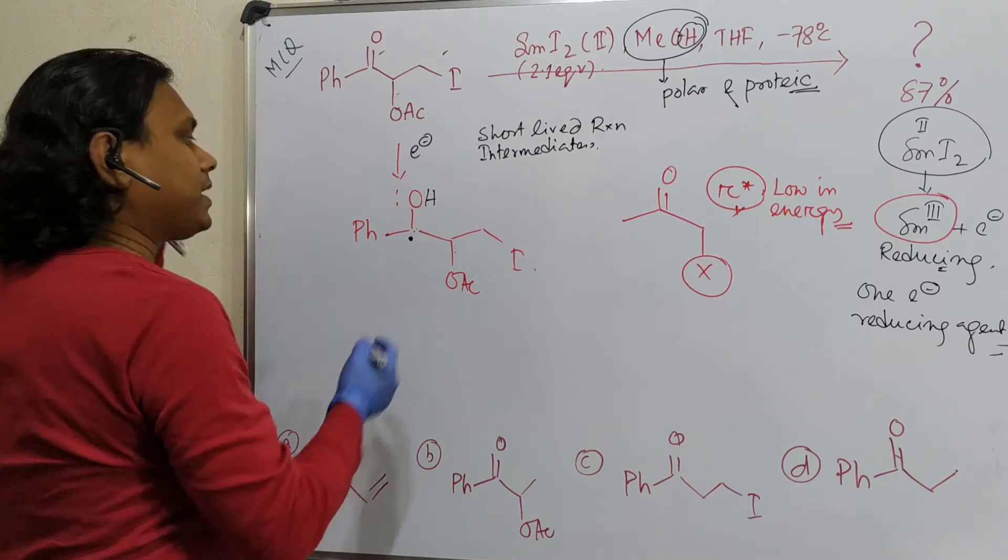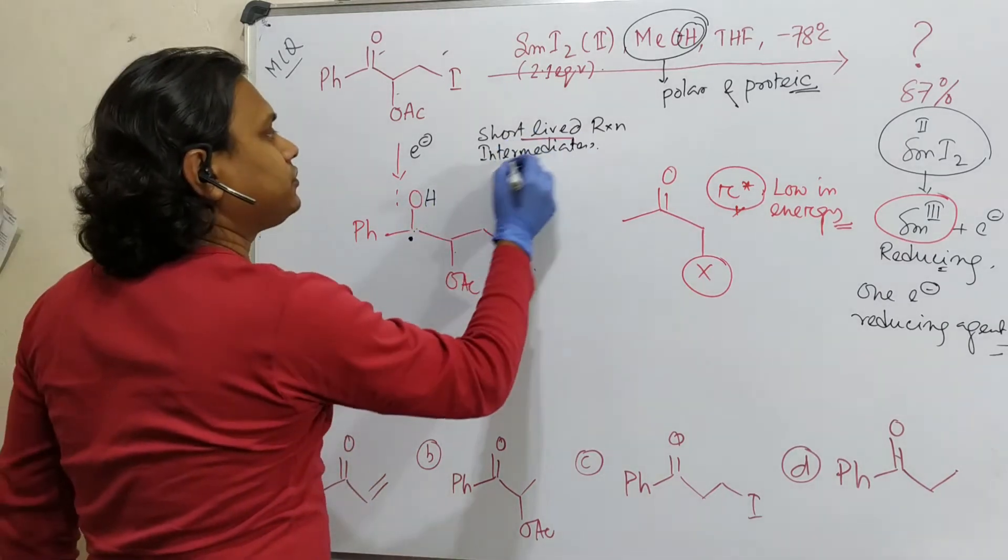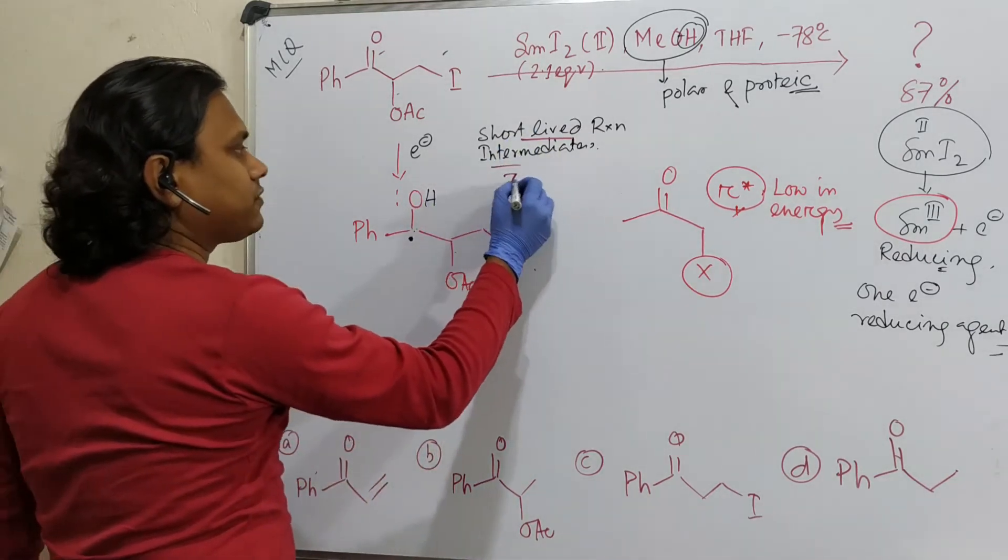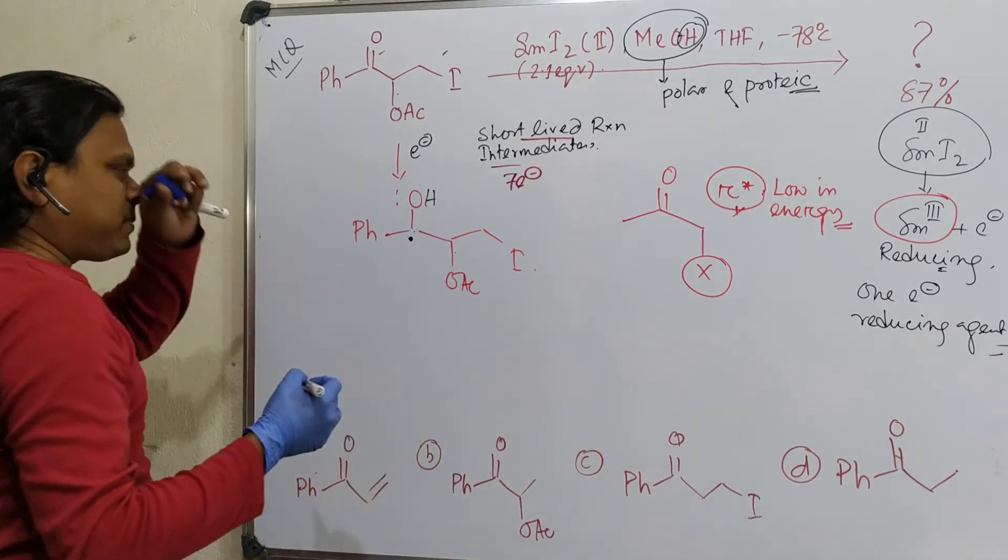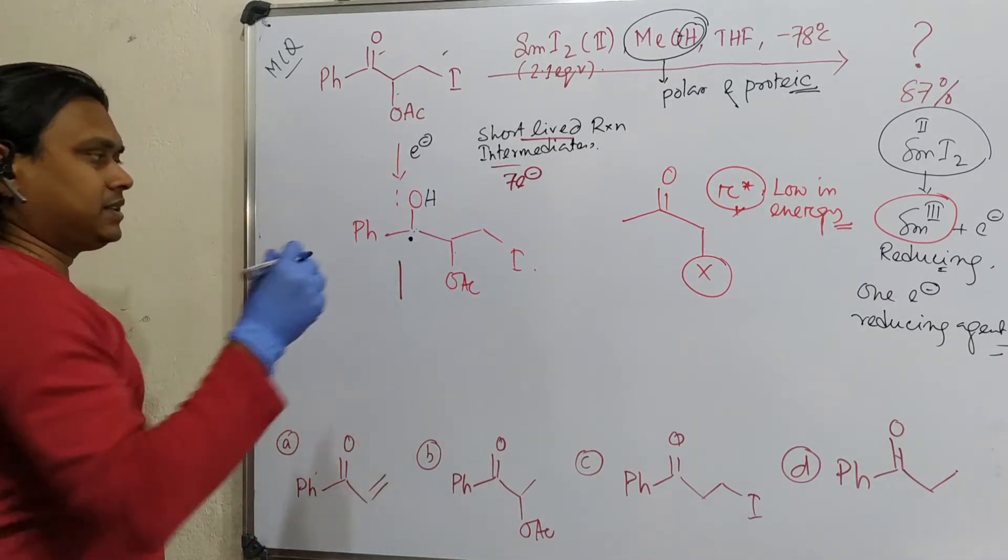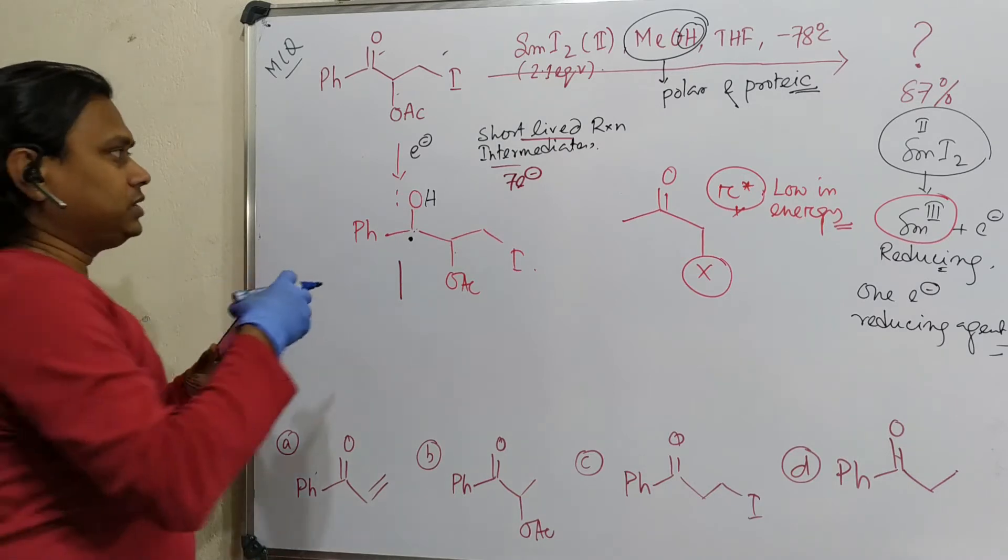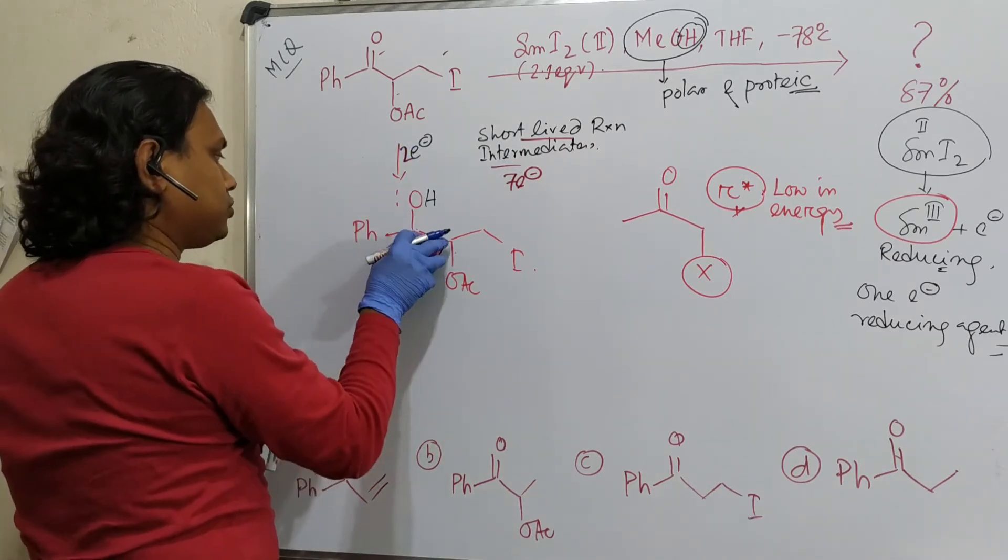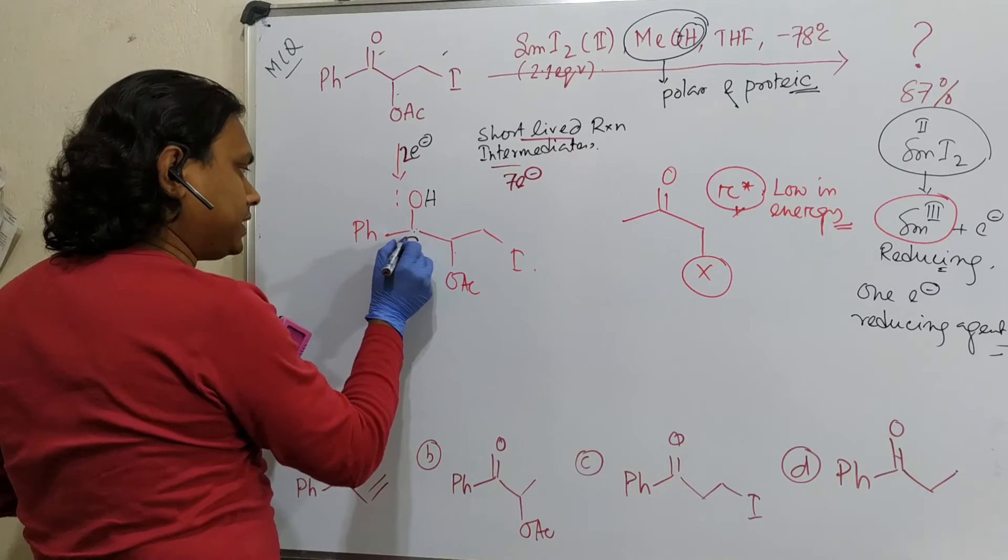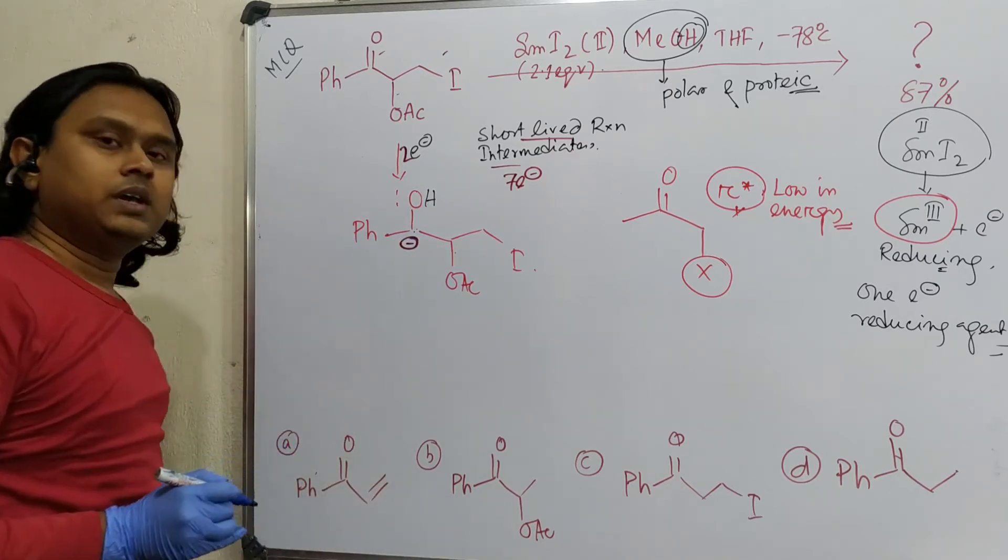So what happens? This is a radical means short-lived reaction intermediate. Actually, this is a seven electron species. So what happens in the next step? It abstracts another electron. So in this case, I should write two electrons. So what will it convert? Negative charge.